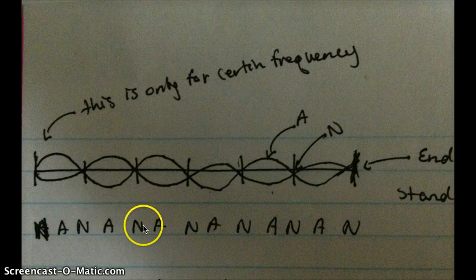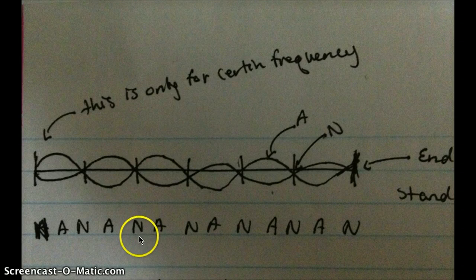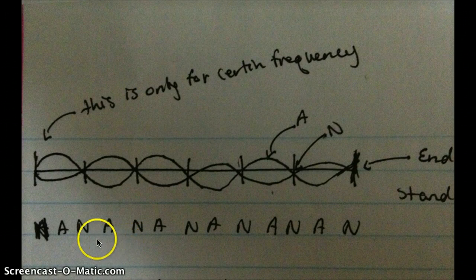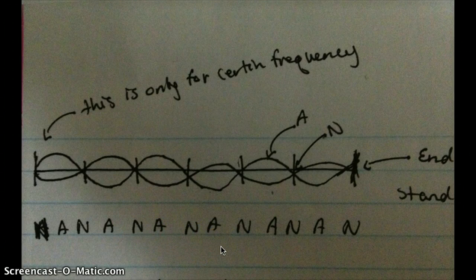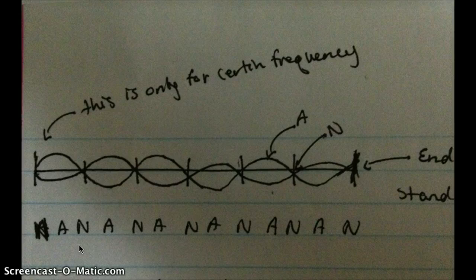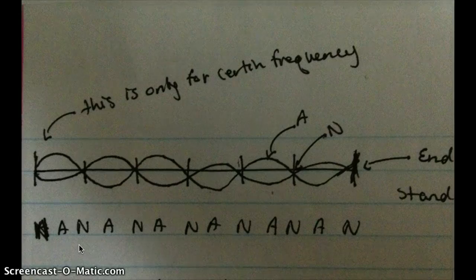And then when it comes around here, there's one whole. And that is the rule of it. You can also have an anti-node, node, anti-node, node, anti-node like that as well. But you cannot have an anti-node, anti-node, and then a node because that's not the rule of it.